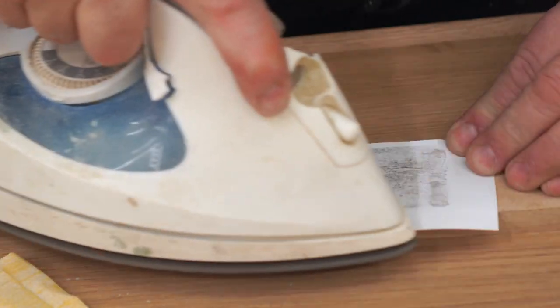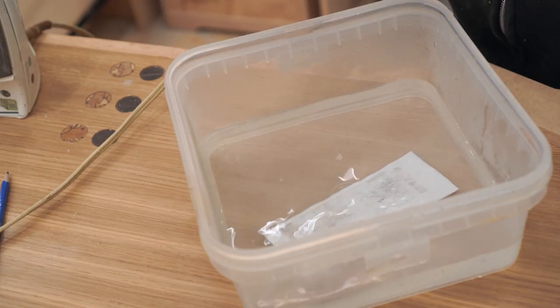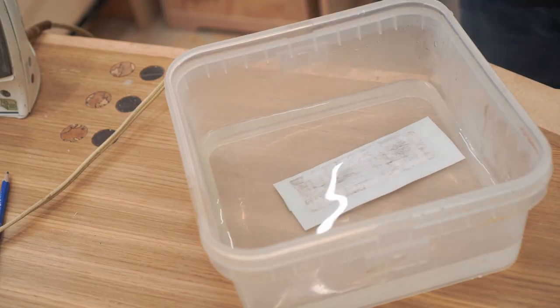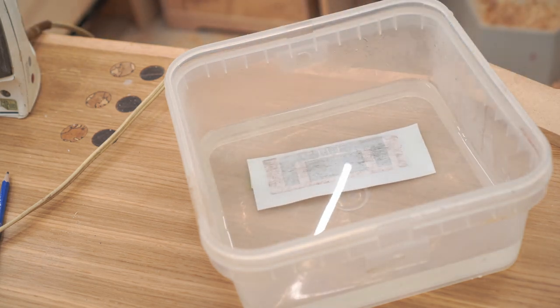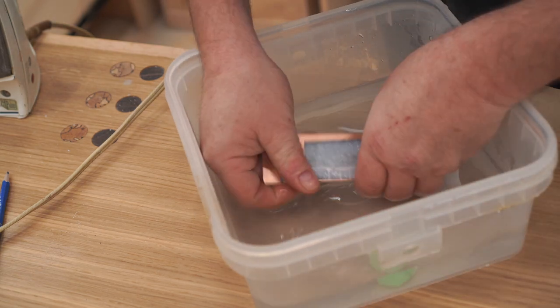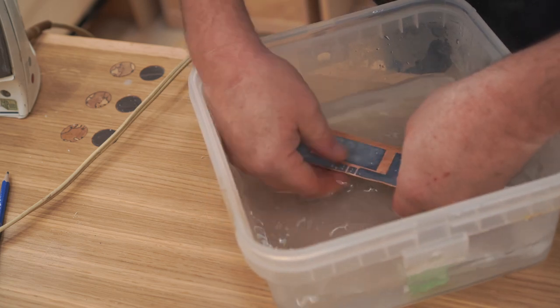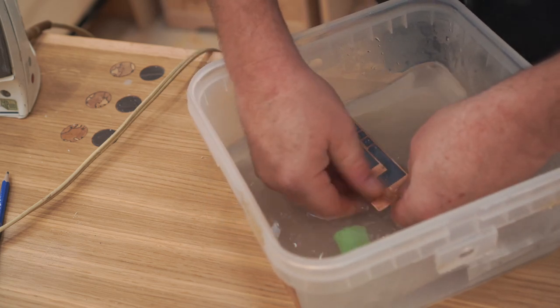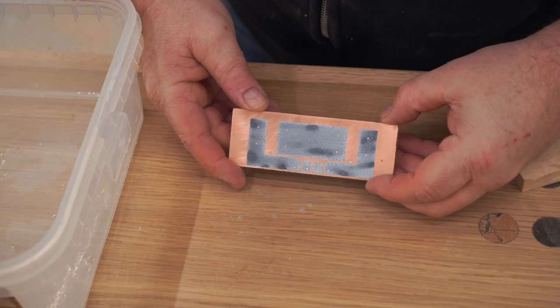Then I recommend letting it cool a little bit before putting it in hot tap water, so that you can get rid of that paper. You want to put it in, leave it to soak for a few minutes, and then start wiping the paper away. I use my thumbs, but you can also use a Scotch-Brite pad, as long as you're not too aggressive with it. The important thing here is to get the paper off of the bare copper. It doesn't really matter if there's anything left on the black part.